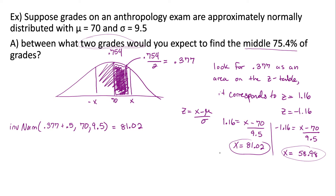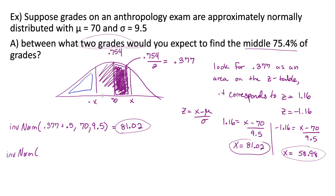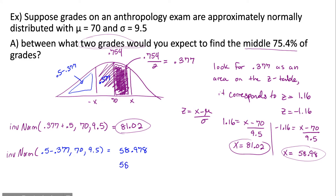Using the calculator, you can bypass the z-score formula to convert z-scores into numbers relevant to the problem. For the lower grade, the area to the left is 0.5 minus 0.377. We put in mean = 70, standard deviation = 9.5, and we get 58.978, which rounds to 58.98 — again matching what we got before.